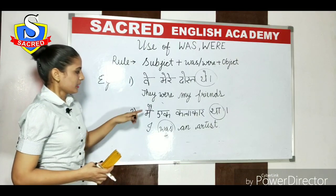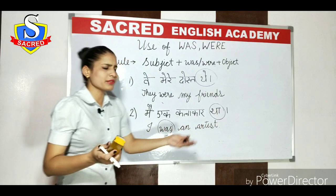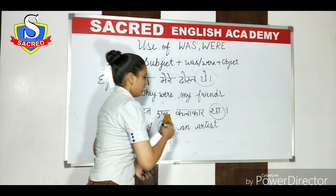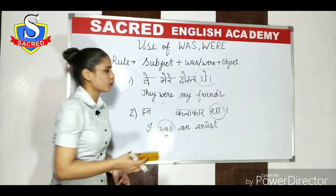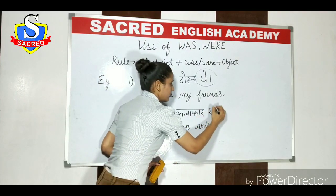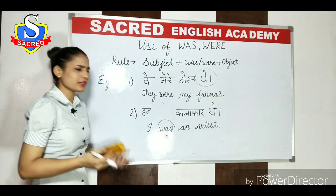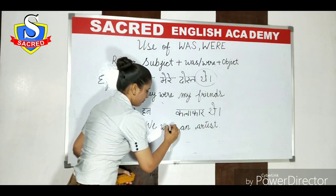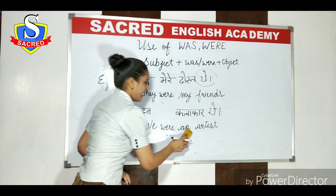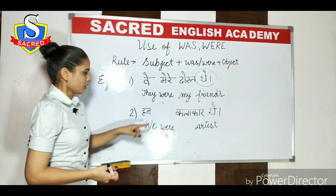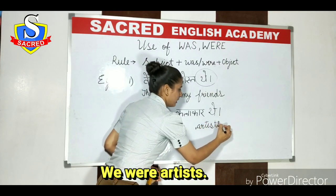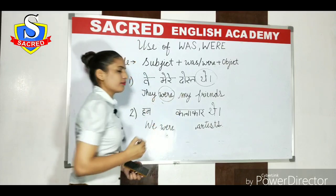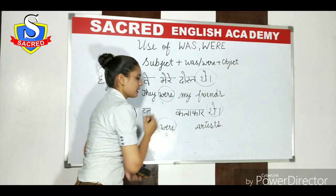So next we have: already written was 'Main ek kalakar tha.' Hum isko change kar lete hain. Hum kehte hain 'Hum kalakar the.' Hum, kyunki hum plural ki baat kar rahe hain, to 'ek' ko mita denge. Hum — 'hum' ko bola jata hai 'we' ko — plural hai, to 'were' word ka use karenge. 'An' ko hum erase kar denge kyunki 'an' singular cheez ko show karta hai. 'We were artists.' Yahan pe past cheez ko 'the' word show kar raha hai.